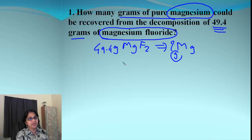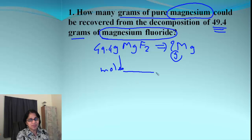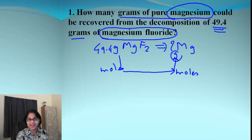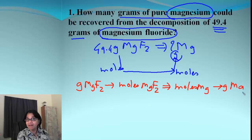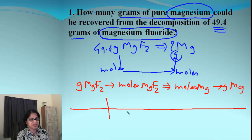We cannot just convert grams to grams of a different substance — magnesium and magnesium fluoride are different. Whenever we do this conversion we need to go from grams to moles of magnesium fluoride, then cross the border to come to magnesium and get moles of magnesium, and from there go back to grams of magnesium. So the roadmap is: grams of MgF₂ → moles of MgF₂ → moles of Mg → grams of Mg.